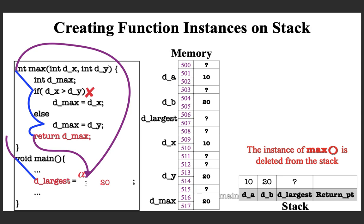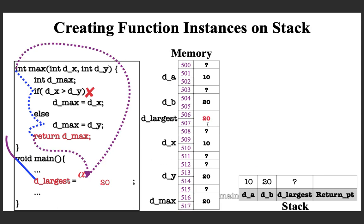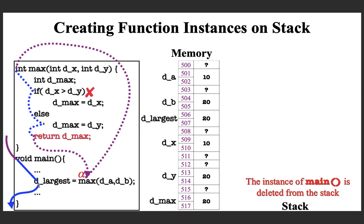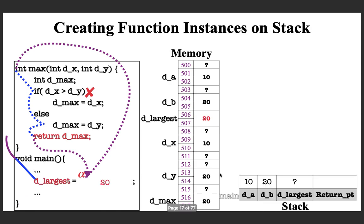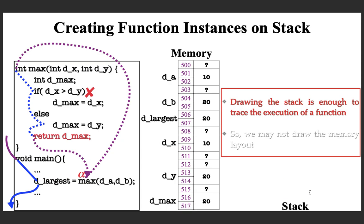The control comes back to the point alpha because the return point was stored on the stack. The instance of max is now deleted from memory and the return value 20 is substituted, so d_largest gets the value 20. After that, with no other statement remaining in main, its execution finishes and the instance of main is also deleted from memory. From this example, we see that drawing the stack is enough to trace execution — the memory layout details are not always needed.